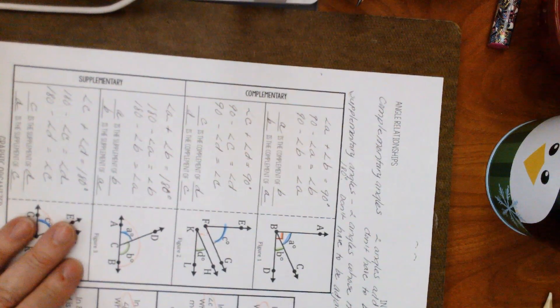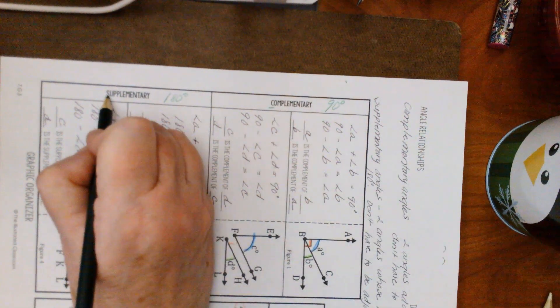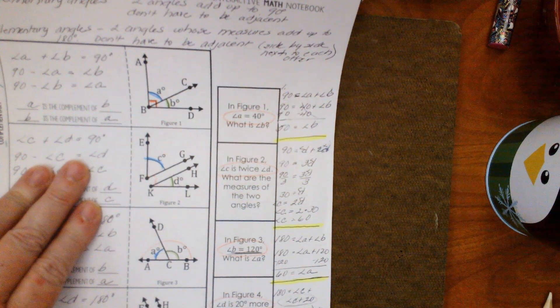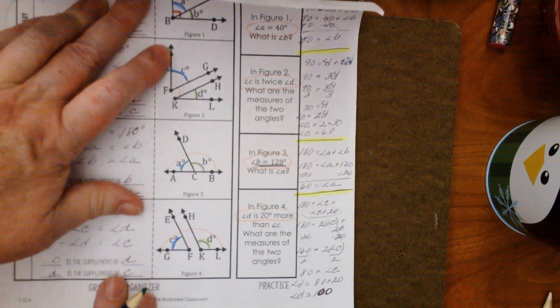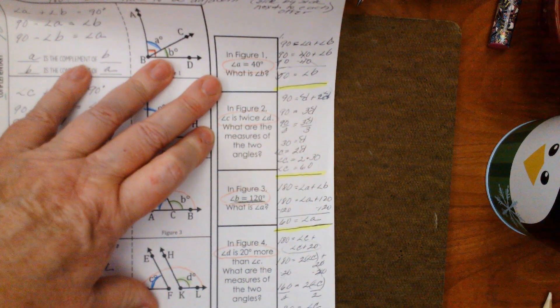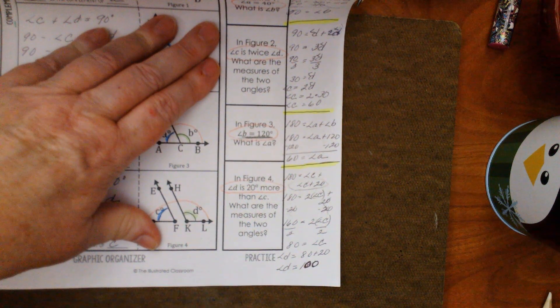Just to go over: complementary is 90 degrees, supplementary is 180 degrees. And one way to remember — C comes before S, so C is 90 and S is 180. I'm going to put this back so you can take a minute and review — you can pause it and hold it there. Thanks for listening.